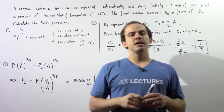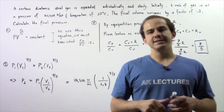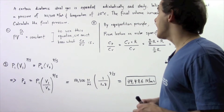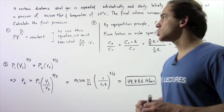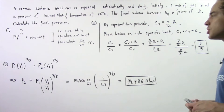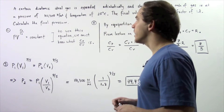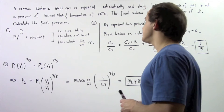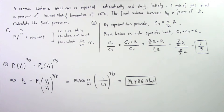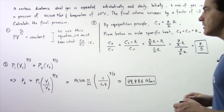Let us look at the following example dealing with an adiabatic and slow expansion of an ideal gas. A certain diatomic ideal gas is expanded adiabatically and slowly. Initially, one mole of ideal gas is at a pressure of 101,300 newtons per meter squared and a temperature of 25 degrees Celsius. The final volume increases by a factor of 1.8. Calculate the final pressure of our ideal gas.